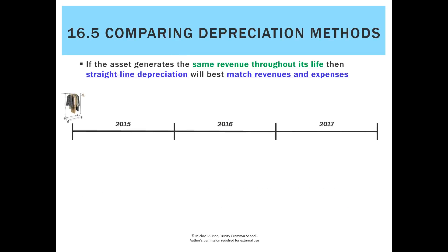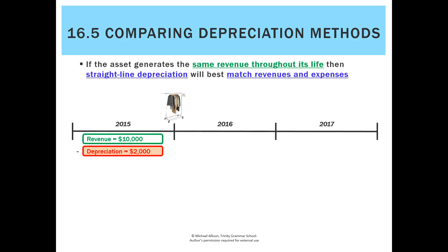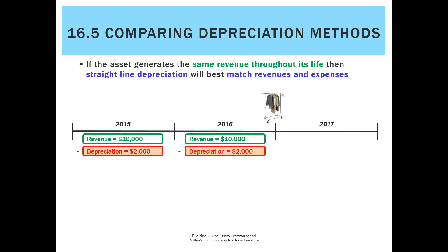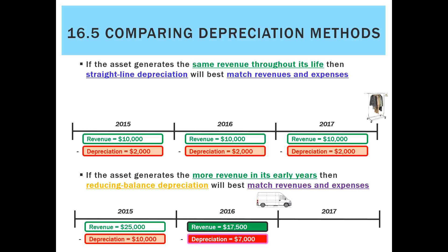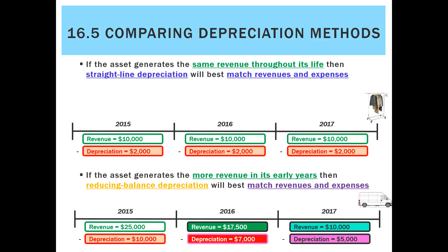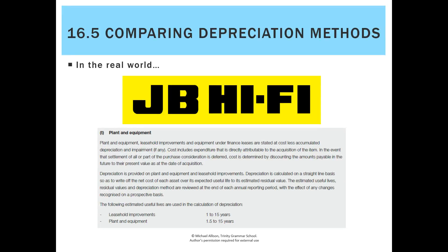If an asset earns more revenue in its early years and less later, use reducing balance because it better matches revenues with expenses. For example, a coat hanger or shop fittings generate roughly $10,000 each year — charge the same depreciation annually. But a car generates $25,000 in year one, so we might charge $10,000 depreciation; in year two it earns $7,500, so charge $7,000; in year three only $10,000 revenue, so reduce depreciation to $5,000.